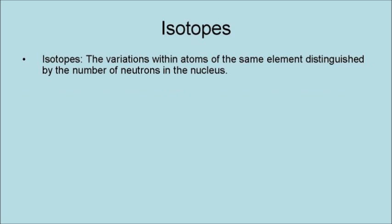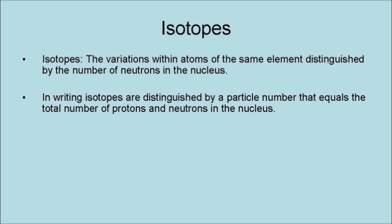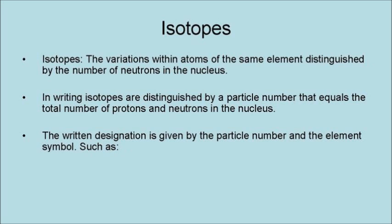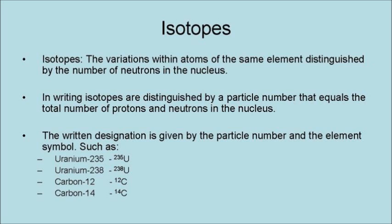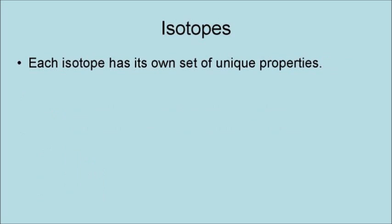Isotopes are the variations within atoms of the same element, distinguished by the number of neutrons in the nucleus. In writing, isotopes are distinguished by a particle number that equals the total number of protons and neutrons in the nucleus. The written designation is given by the particle number and the element symbol, such as uranium-235, uranium-238, carbon-12, carbon-14. Each isotope has its own set of unique properties.